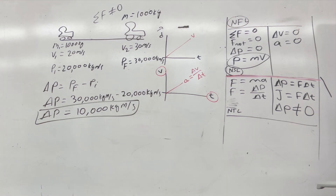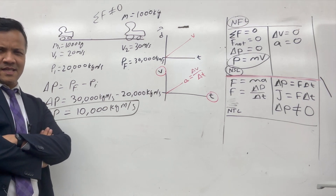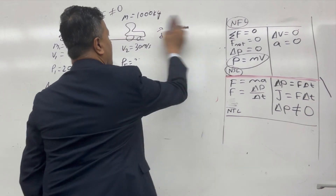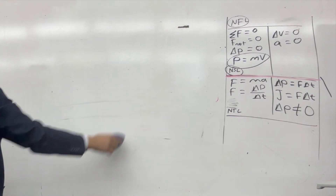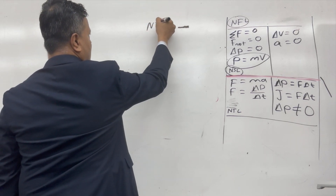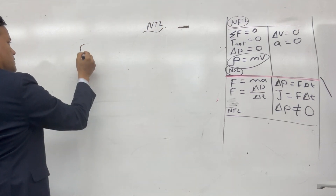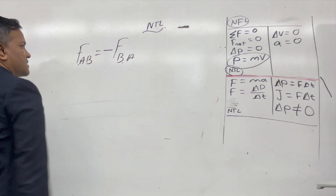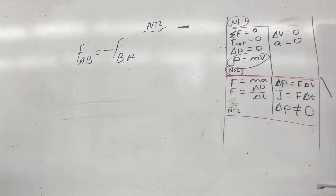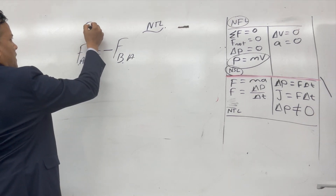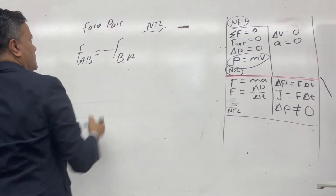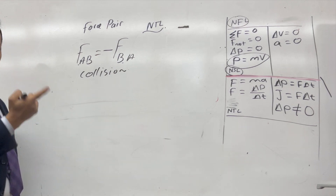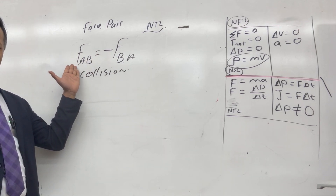So Newton's First Law has the names momentum and inertia. Newton's Second Law has the name impulse. Now let's look at Newton's Third Law. Newton's Third Law states: force on A by B is equal to force on B by A — equal in magnitude but opposite in direction. Newton's Third Law has a name: collision. How many bodies does it take? Two bodies — body A and body B.